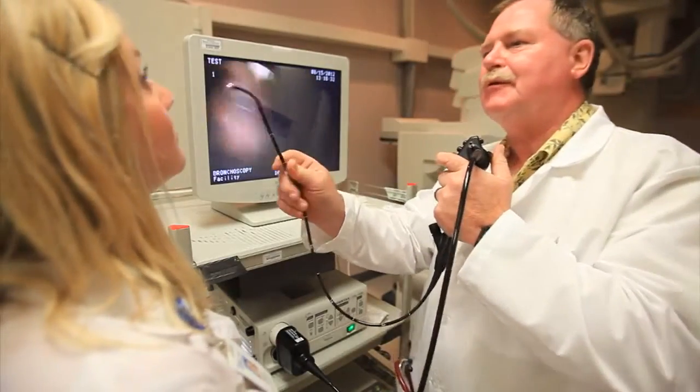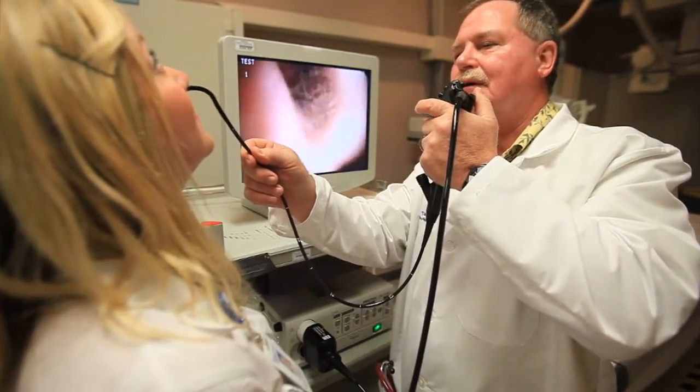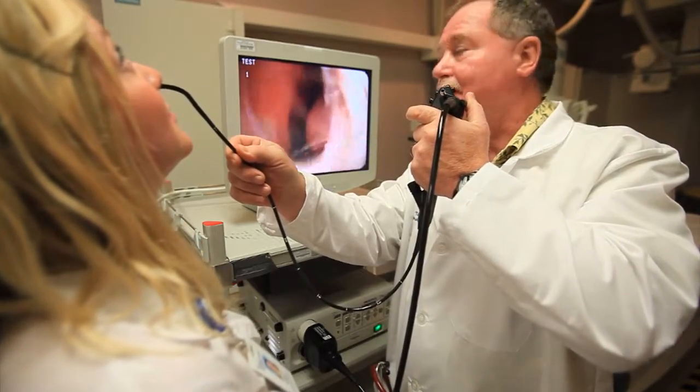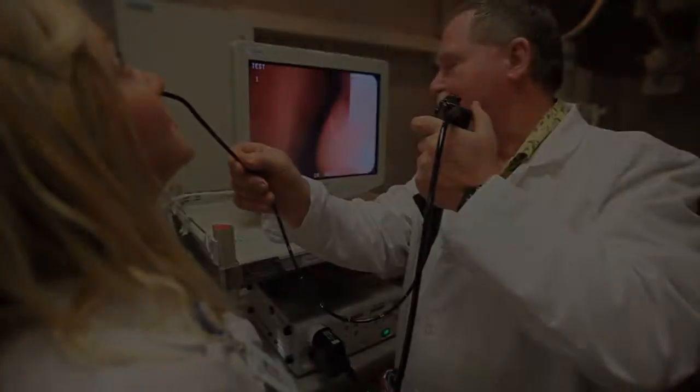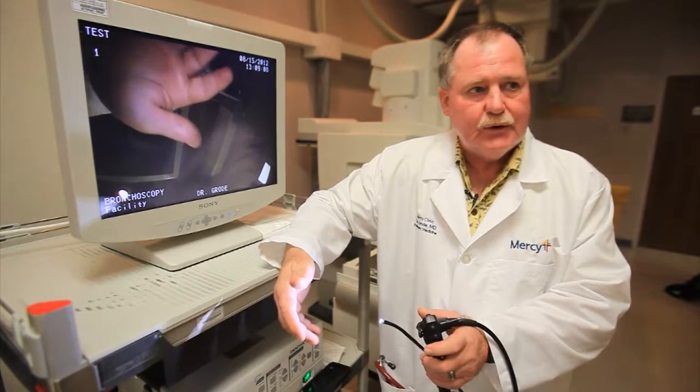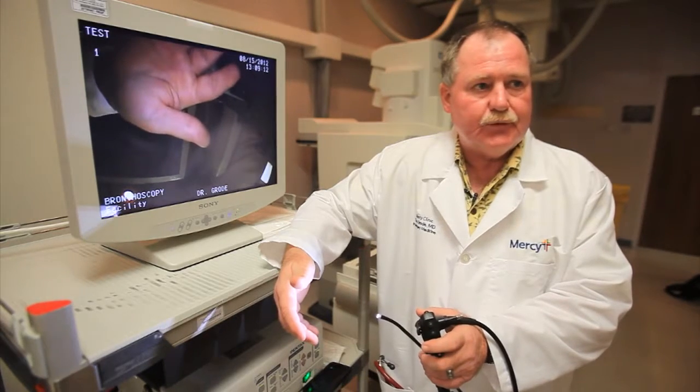Once the patient is asleep, the very small tube is passed through the nose. The nose is treated first with a jelly that'll anesthetize or numb it, as well as the throat, trying to block the cough. The nose acts really as a guide for the tube.